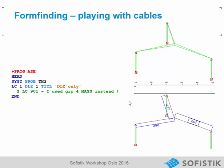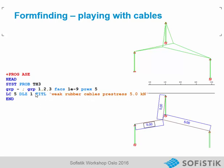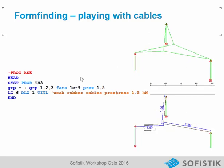Now we play with the pre-stress. We can define that the cables have no stiffness — the factor of stiffness is nearly zero — and we want a given pre-stress of 5 kN. The result is that the deformation goes to the correct point of equilibrium where all cables have 5 kN. The angles between the three cables are really 120 degrees, which is the correct position for equal cable forces. The cables now behave like a rubber band — they are very weak, and even if they deform, the 5 kN remain in the cable.